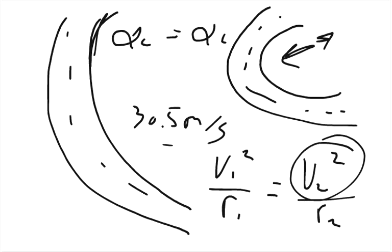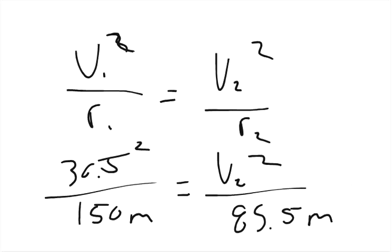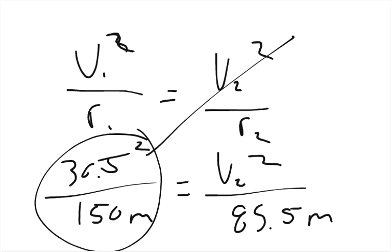And so by solving for V, you can basically just know how fast you can go around the second curve. So that's what we're going to do. So 30.5 squared is, I'm going to move this up here.